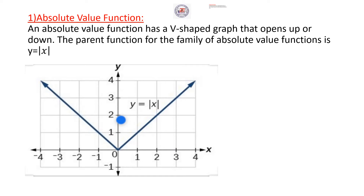An absolute value function has a V-shaped graph that opens up or down. The parent function for the family of absolute value functions is Y equal absolute value of X. The graph of Y equal absolute value of X has the shape of the letter V.